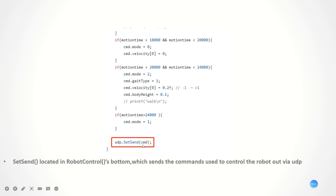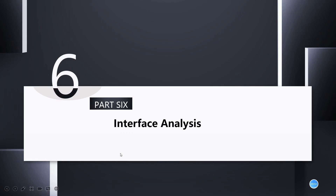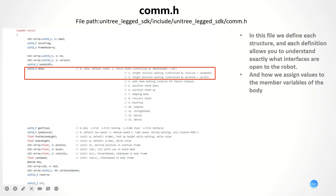The set function, located in robot control, sends the commands used to control the robot out via UDP. We put the logic to control the robot between these two functions. The logic in the routine is contained in a series of if statements. Motion time is a cumulative variable that enters different if statements depending on its value, and then modifies the value of the corresponding CMD member according to the desired command. The next part is about the interface analysis.